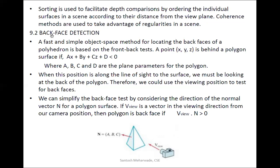Next is back face detection. Any polygon has two faces: the front face, which is visible to the viewer, and the back face, which is hidden from the viewer. A fast and simple object space method for locating back faces of a polyhedron is based on the front-back test. We want to determine which face of a given polygon is the front face and which is the back face.